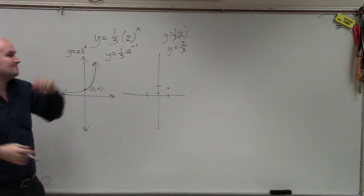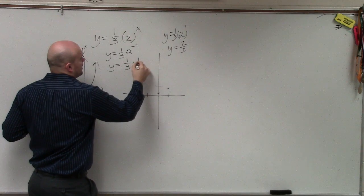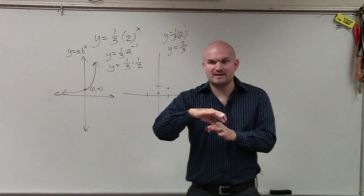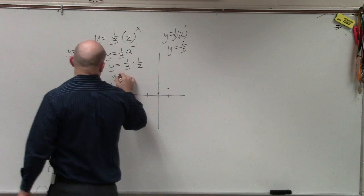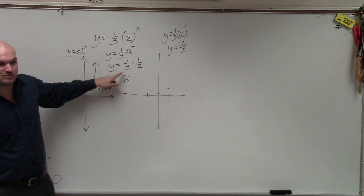Then let's do y equals one-third times 2 to the negative first power. Remember, negative powers, to make that a positive, that's y equals 1 over 3 times 1 over 2. Right? You've got to put it in the denominator to make it positive. So therefore, you have y equals 1 over 6. So when x equals negative 1, it equals 1 sixth.